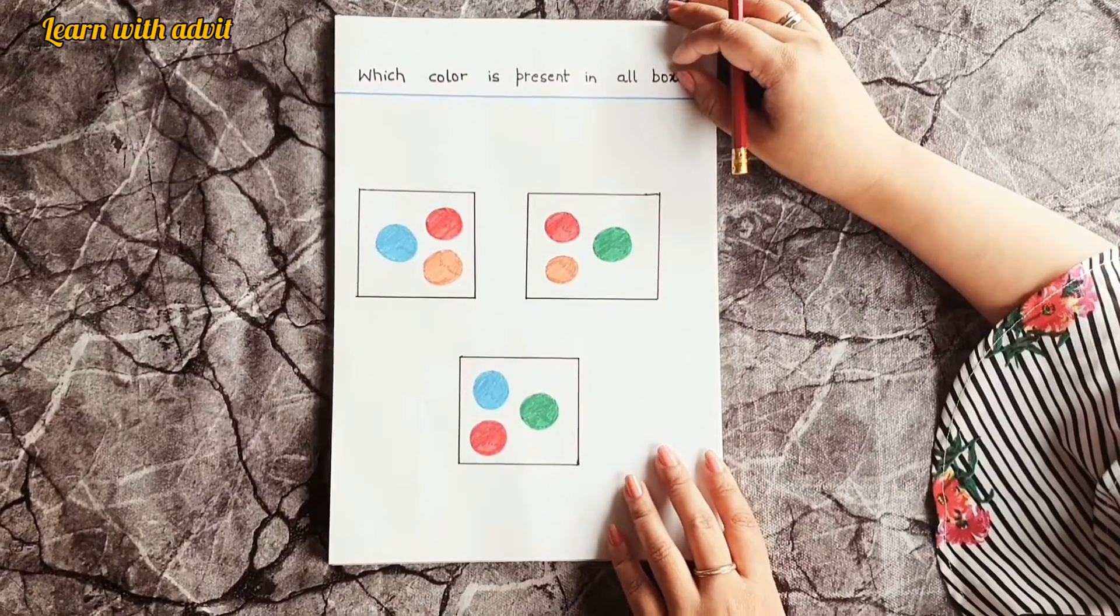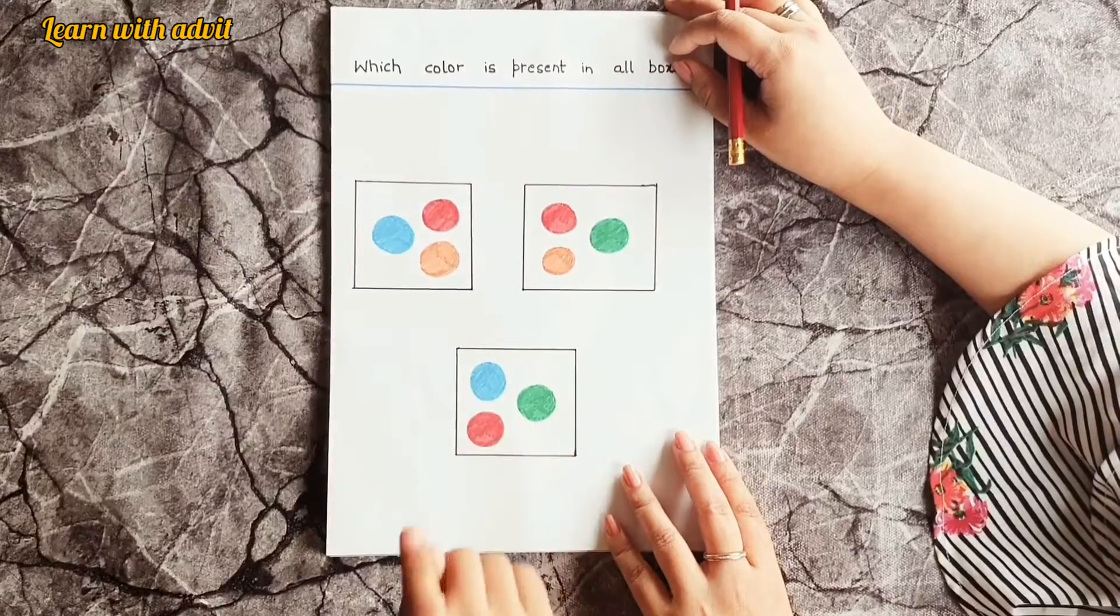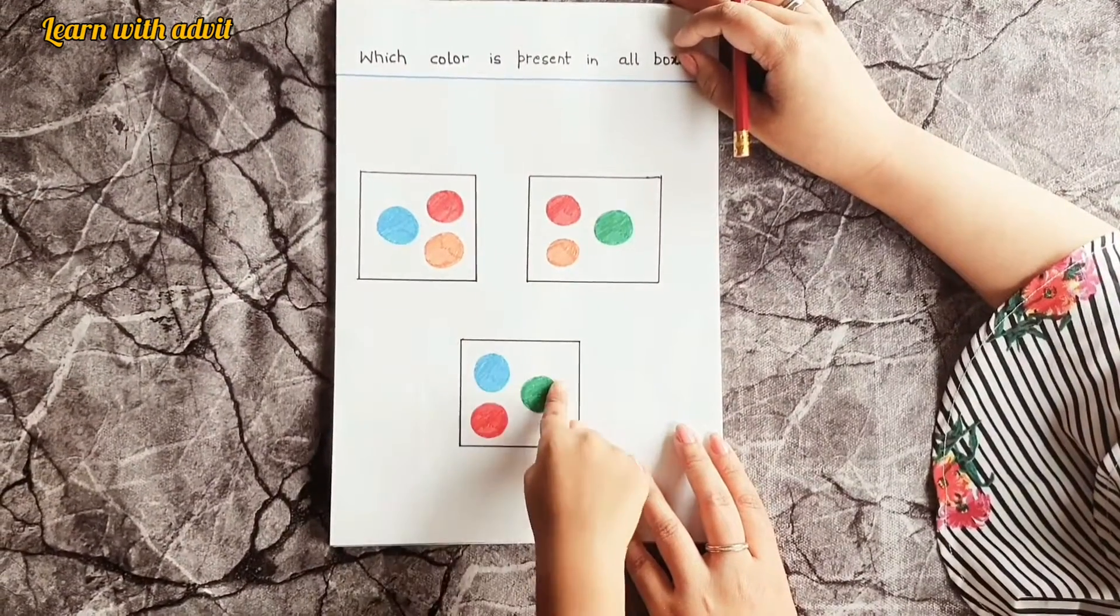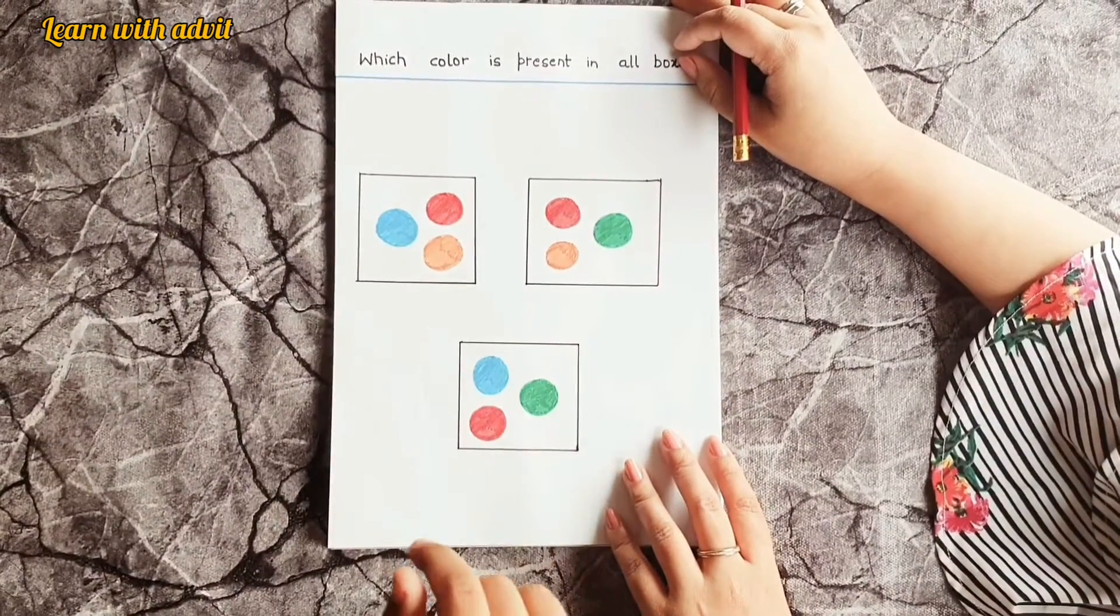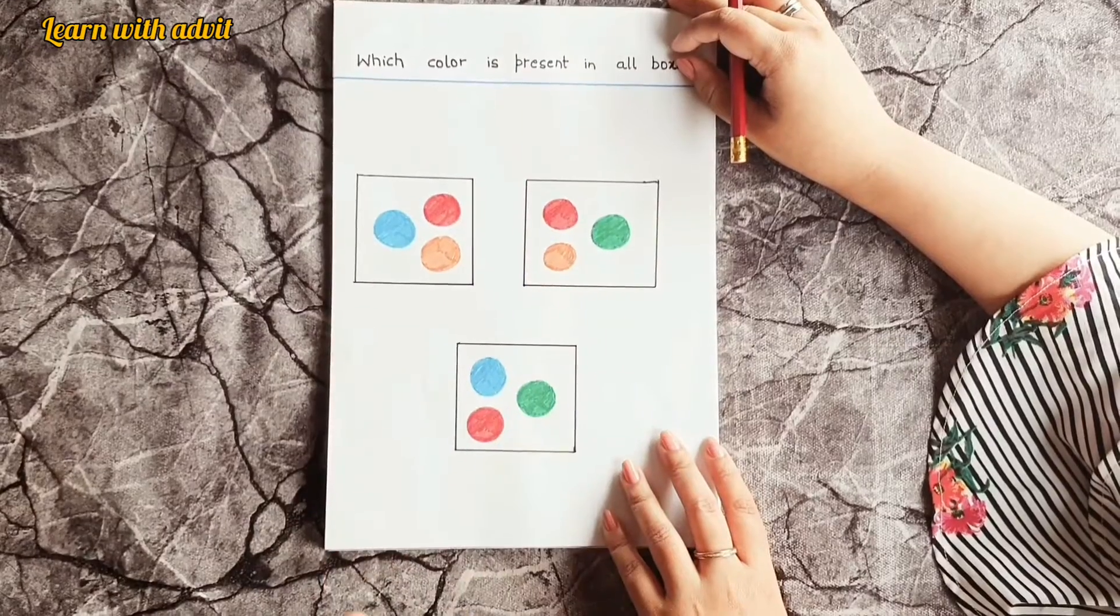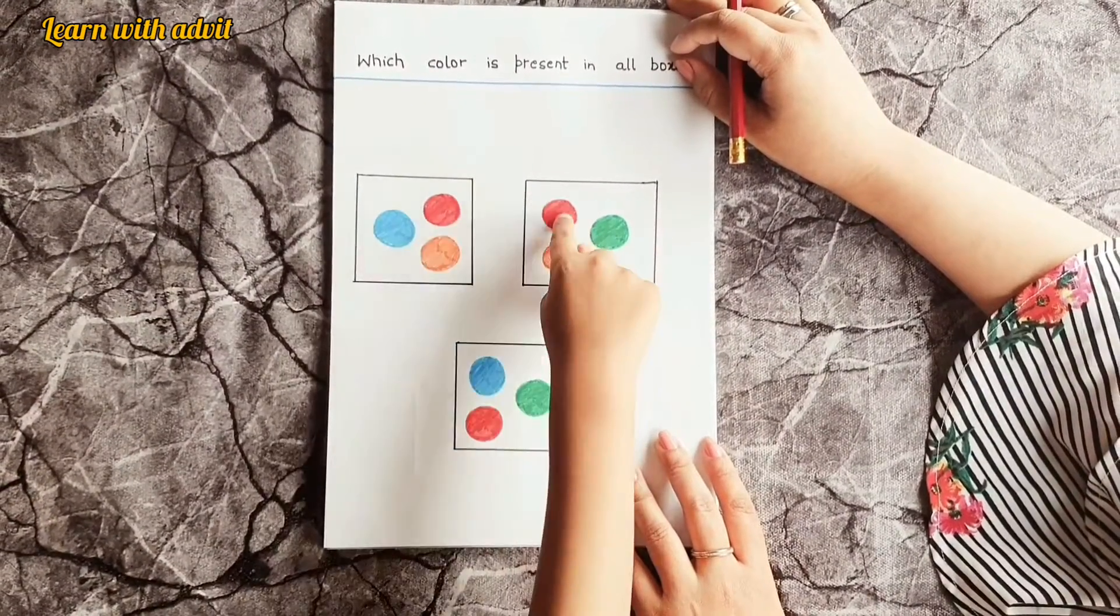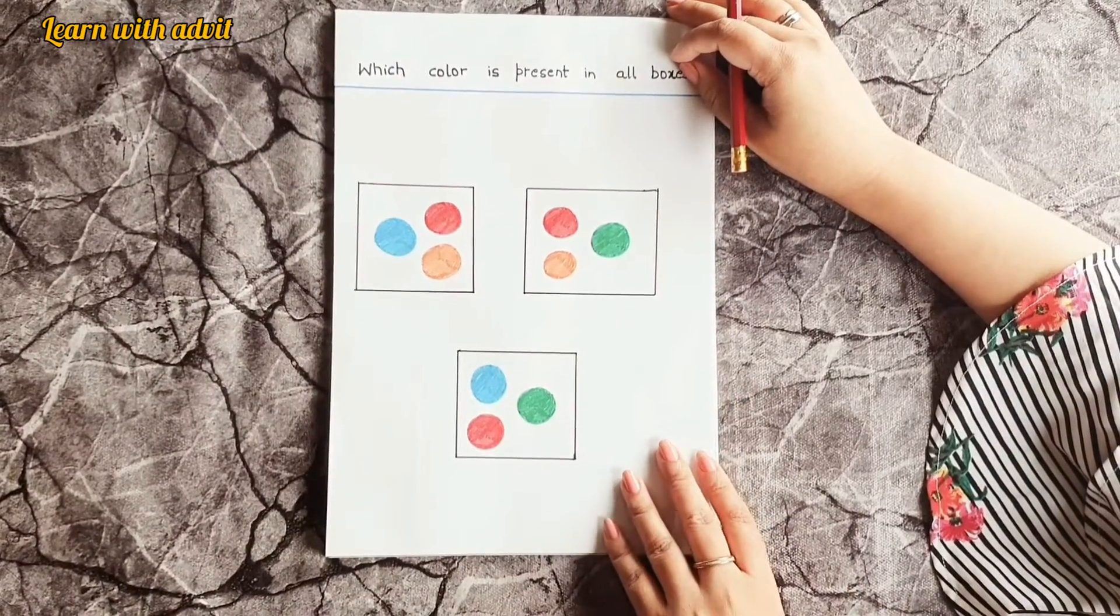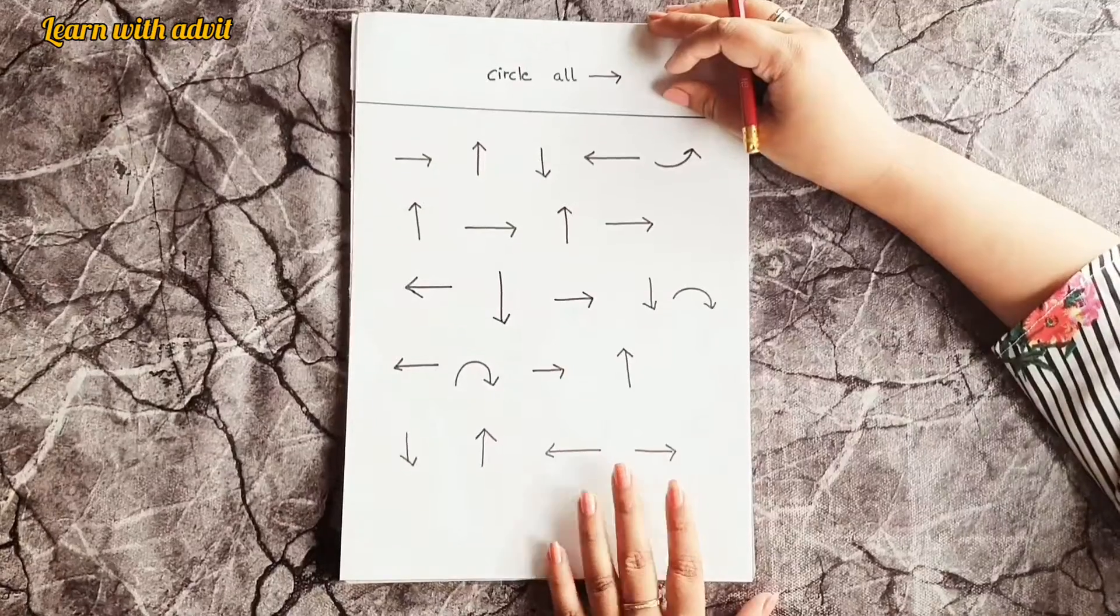So blue is in this one, blue is in this one, blue is not in this one. Green is in this one, green is in this one, and green is not in this one. Orange is in this one, orange is in this one, orange is not in this one. Red is in this one, red is in this one, and red is in this one. Red is present in all boxes. My favorite color. Very good.